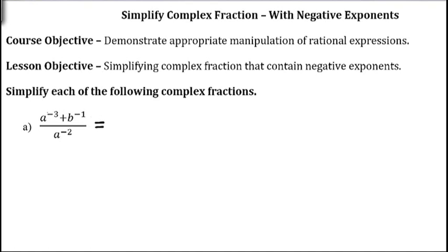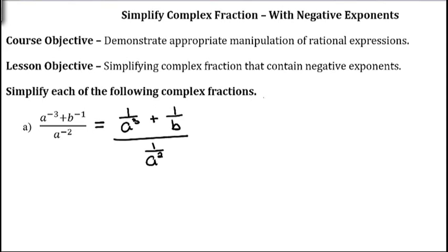The way that I like to do these is to rewrite each of our terms. So a raised to the negative third is the same as 1 over a cubed, plus b to the negative first is the same as 1 over b, and a to the negative second is the same as 1 over a squared. Now it's just like we were doing before — we want to find the LCD and multiply by it.